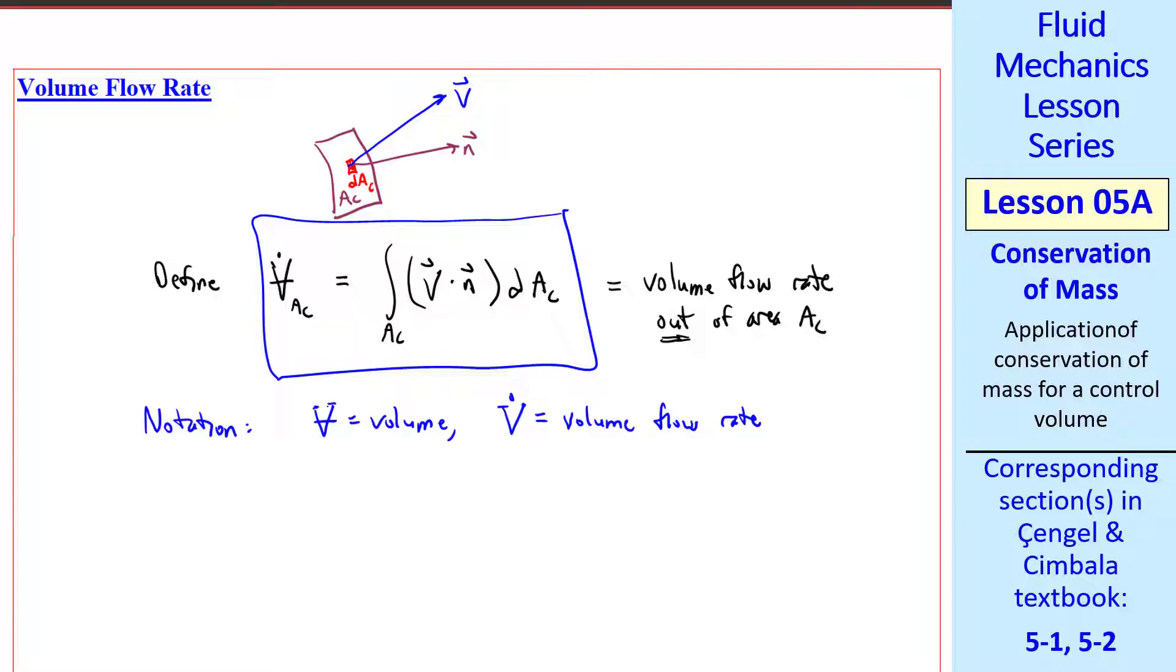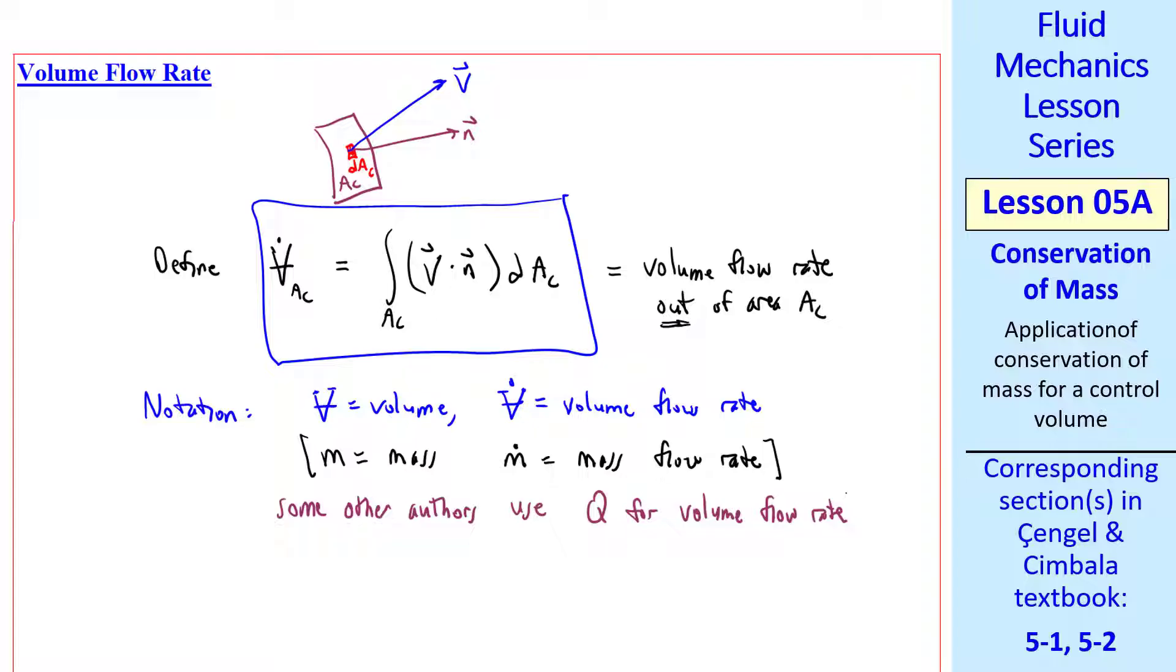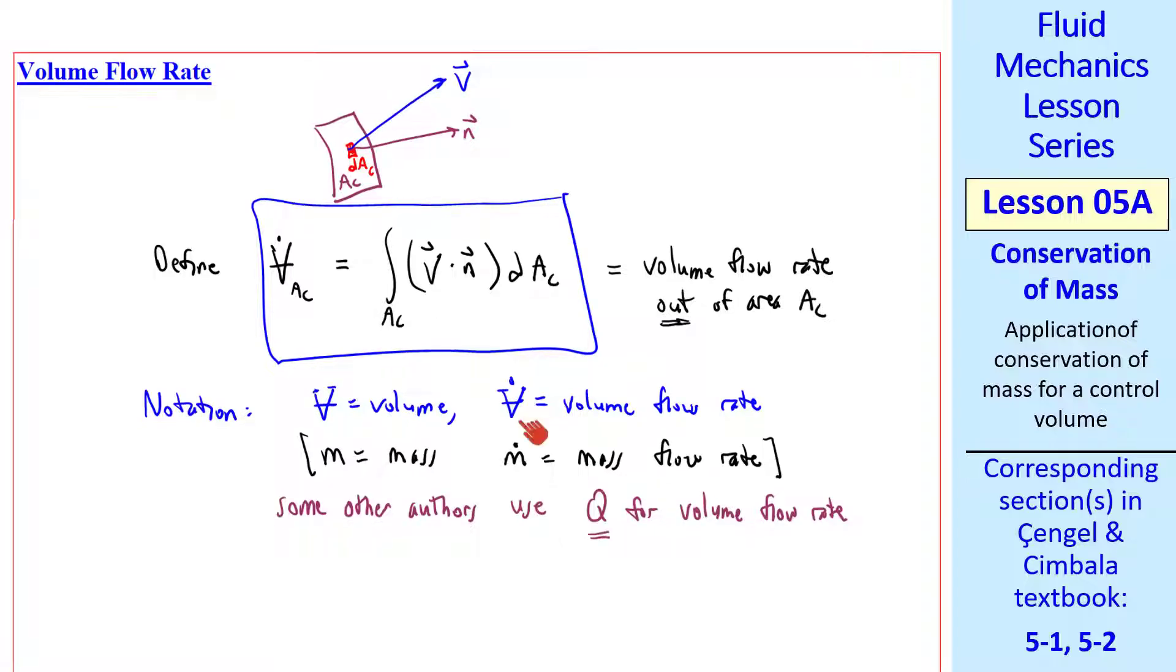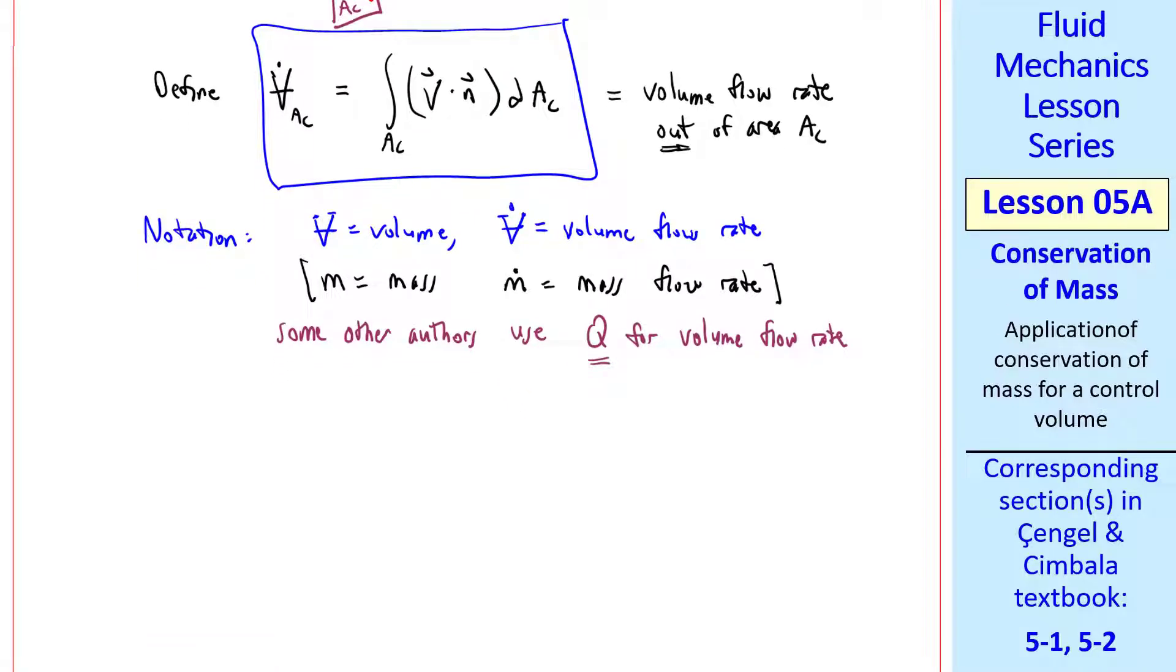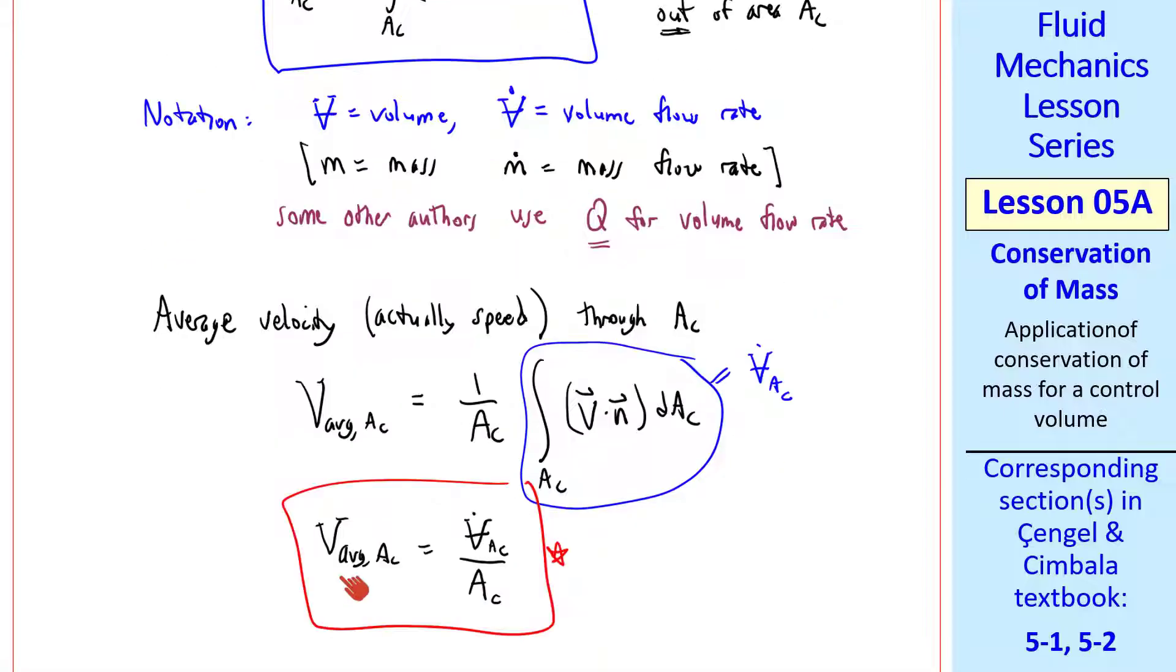A quick comment about our notation, since v is volume, v dot is volume flow rate, analogous to m equal mass and m dot is mass flow rate. Some other authors use q for volume flow rate. We will use this notation in these videos. Let's also define an average velocity through area AC, which is actually a speed, the magnitude of velocity. We define v average AC as 1 over AC times this integral. So v average AC is v dot AC over AC. But you still have to do this integration to calculate v dot AC.